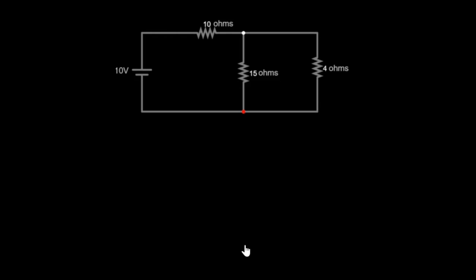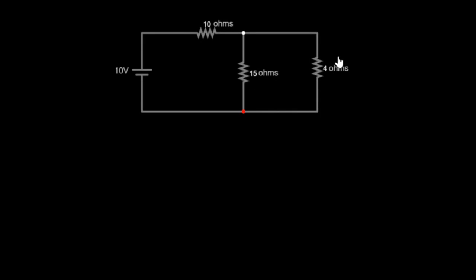On the screen, you can see clearly that the 15 ohms and the 4 ohms resistors are in a parallel connection, simply because they are connected to the same nodes. This node here and this node here — the 15 ohms resistor is connected to it and the 4 ohms resistor is also connected to it. So that tells us clearly that they are in a parallel connection.